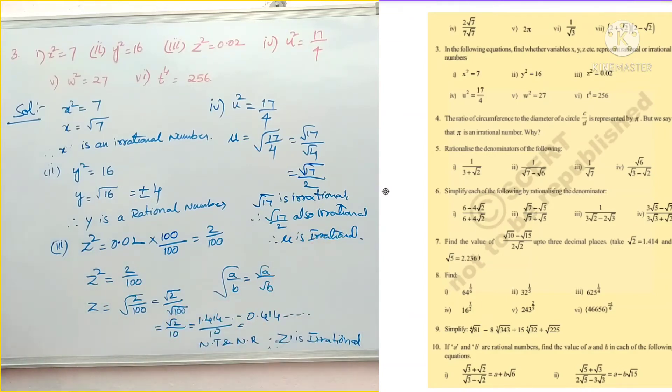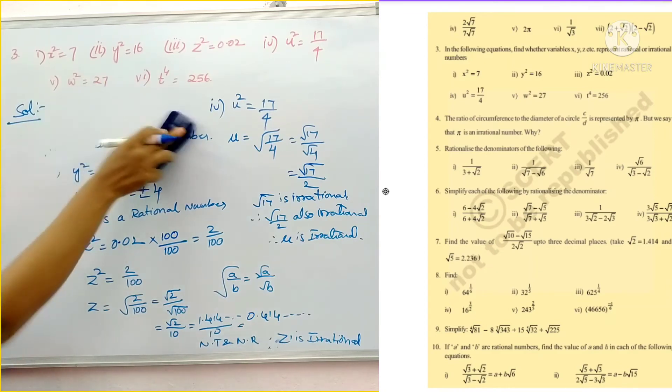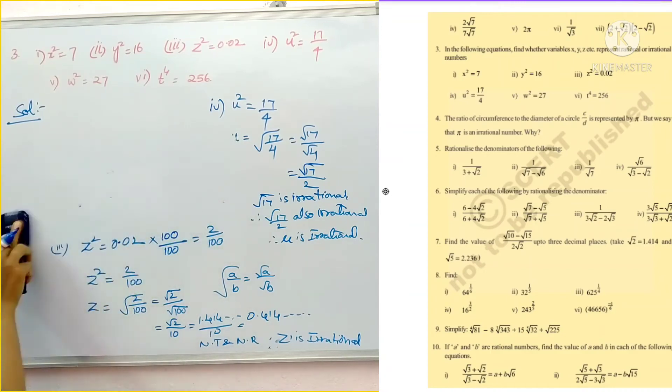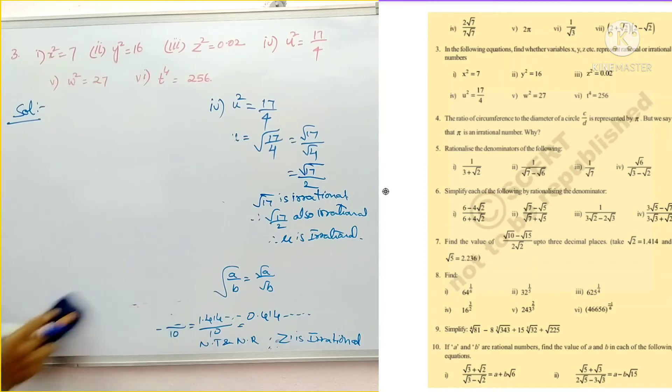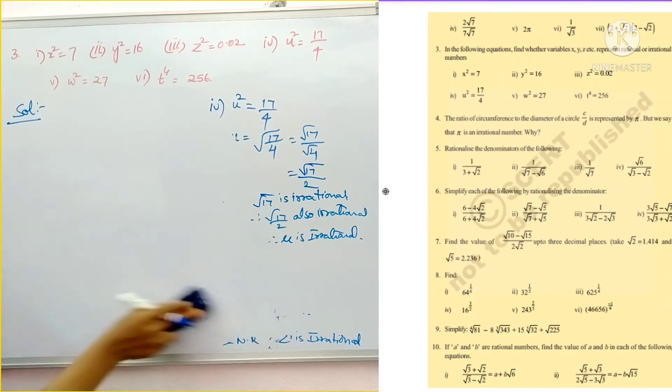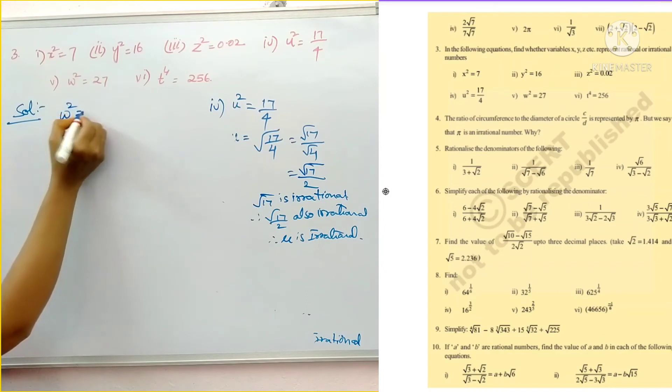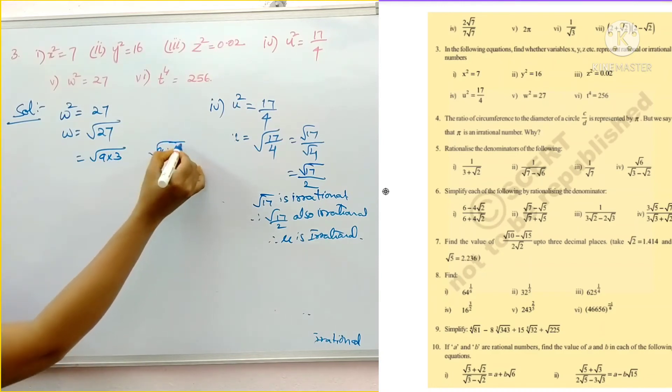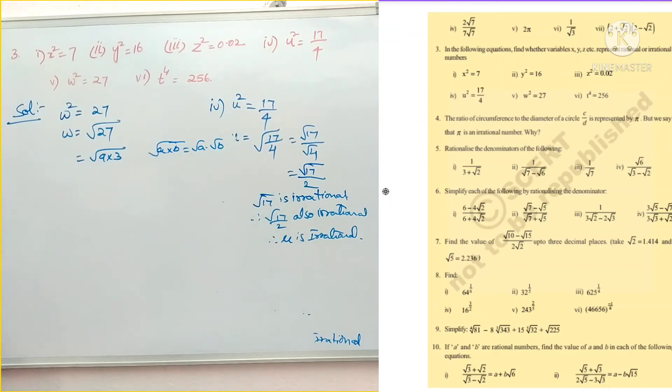Are you following students? It is very easy. And here are our fifth problem. W square is equal to 27. This 27 is also not a perfect square. W square is equal to 27. Then w equal to square root of 27. That is we can write 27 as 9 into 3. So we can write root A into B is equal to root A into root B. So this will also be root 9 into root 3. What is the value of root 9? 3. So this is 3 root 3.